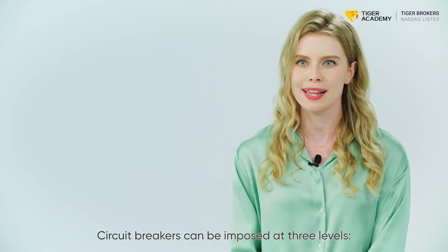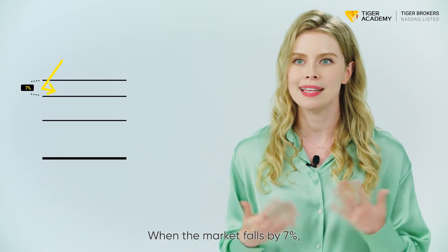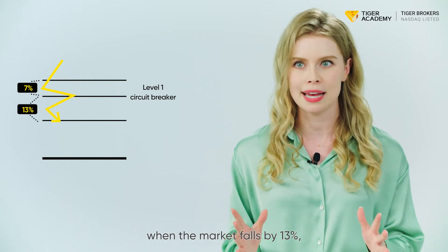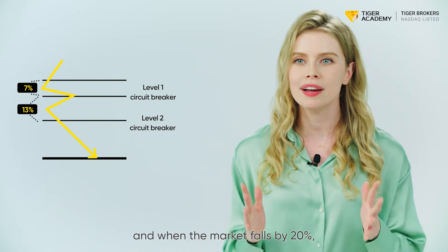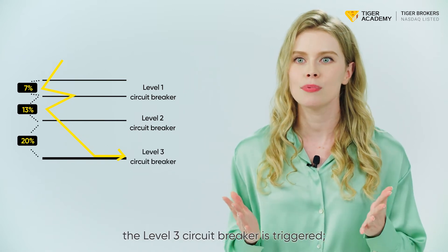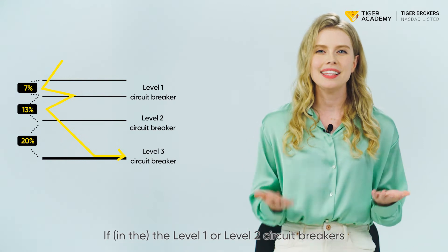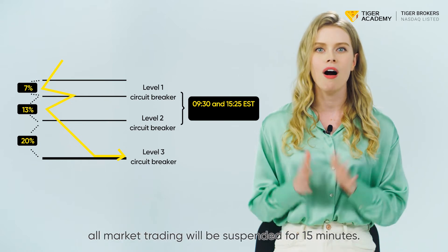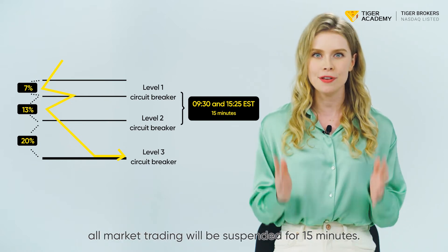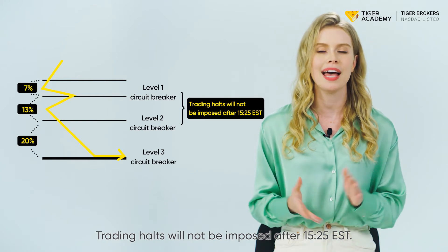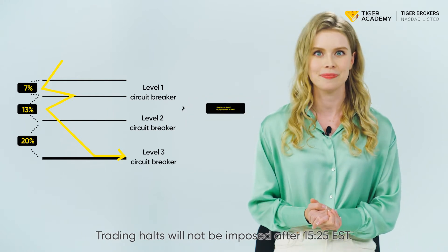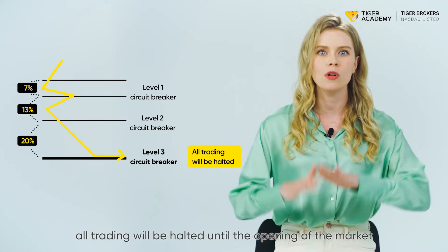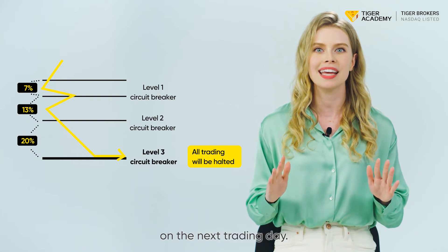Circuit breakers can be imposed at three levels. When the market falls by 7%, the Level 1 circuit breaker is triggered. When the market falls by 13%, the Level 2 circuit breaker is triggered. When the market falls by 20%, the Level 3 circuit breaker is triggered. If Level 1 or Level 2 circuit breakers are triggered between 9:30 and 15:25 EST, all market trading will be suspended for 15 minutes. Trading halts will not be imposed after 15:25 EST. If the Level 3 circuit breaker is triggered at any time during the trading day, all trading will be halted until the opening of the market the next trading day.